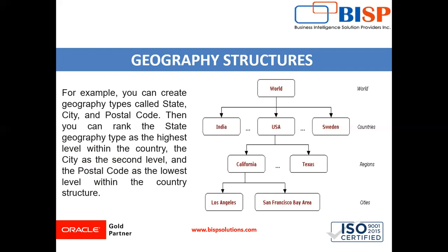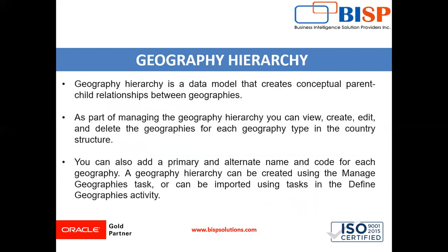For example, USA is the parent and California and Texas are the children. This is how we define hierarchy. Geography hierarchy is the data model that creates a conceptual parent-child relationship between geographies. As part of managing the geography hierarchy, you can view, create, edit, and delete geographies for each geography type in the country structure. You can also add a primary and internal name and code for each geography. A geography hierarchy can be created using the manage geography task or imported using the task in the defined geography activity.